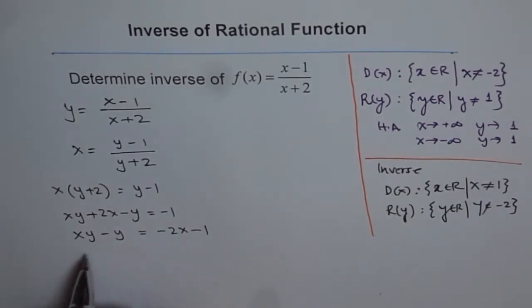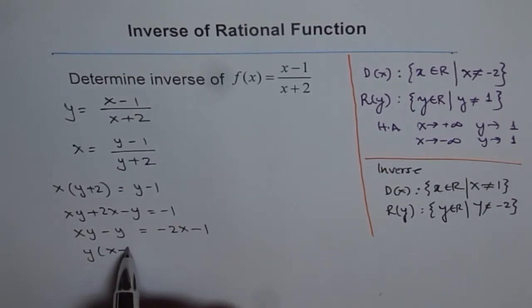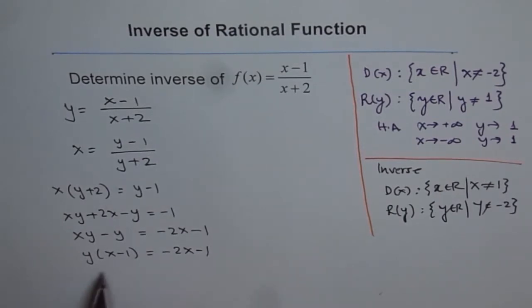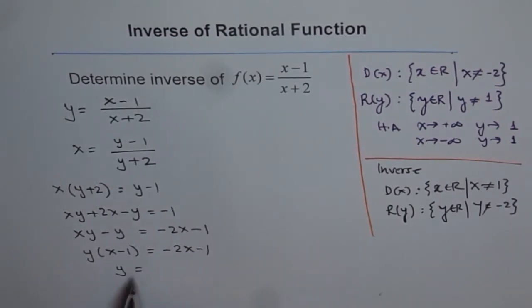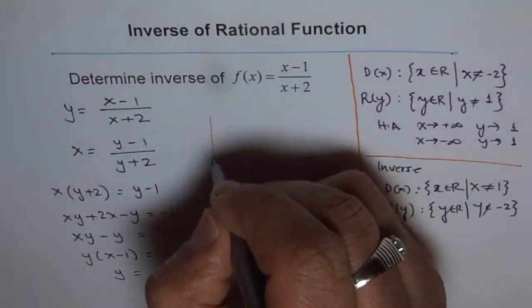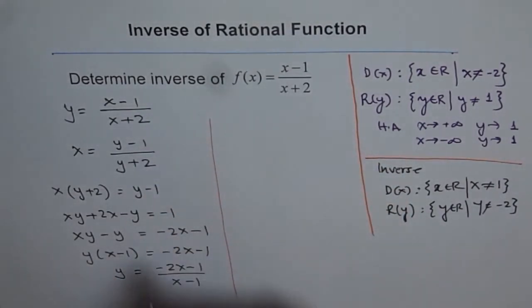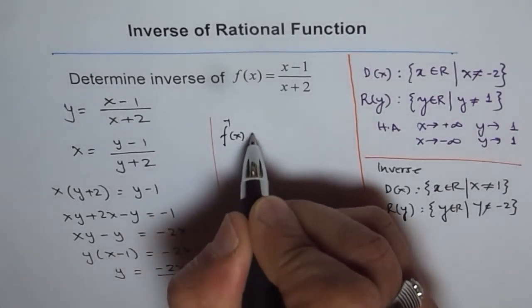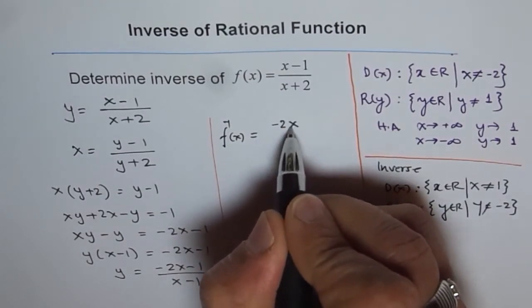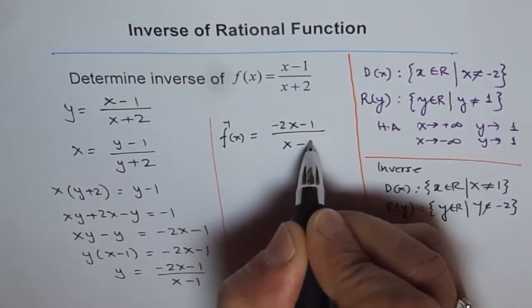Now here we can take y common. Once we take y common, we get x minus 1 equals to minus 2x minus 1. And now we can isolate y, and we can say y equals to minus 2x minus 1 over x minus 1. So that is the result, which we get from here, and therefore, we can now write this as inverse function. This is f inverse of x is equals to minus 2x minus 1 over x minus 1.